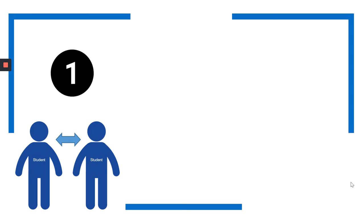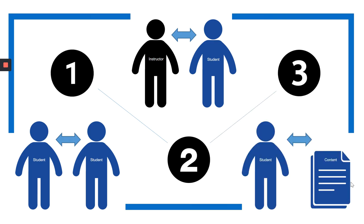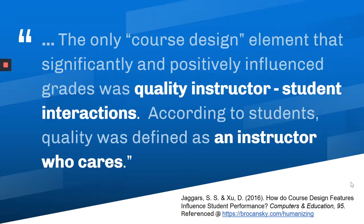There are three types of connections you're trying to facilitate as a teacher. One is a student to student connection with their peers. Another is an instructor to student connection with you. And then the third is a student to content connection with the material in your class. Today I just want to focus on the instructor to student relationship because of our time, but also because in the literature that relationship is something that's really focused on and it's key.